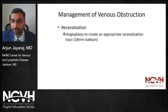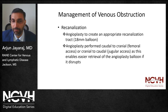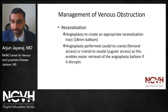This angioplasty is typically carried out using a large caliber balloon, like an 18 millimeter balloon. At times you may require a smaller balloon because of watermelon seeding, so I typically use a 12 millimeter balloon and then repeat angioplasty using an 18. When performing angioplasty, if the access is femoral, we typically go caudal to cranial, and vice versa with jugular access, because it enables easier retrieval of the angioplasty balloon if it disrupts — and it disrupts fairly often, especially when dealing with CTO lesions.